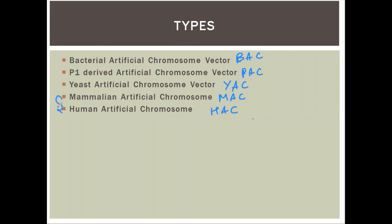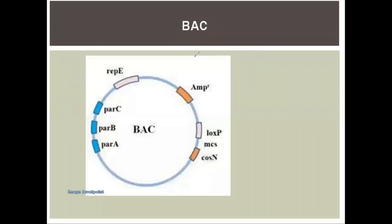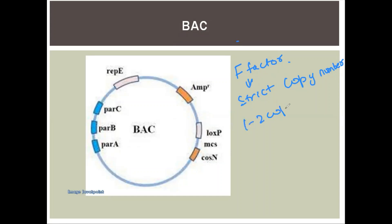Let's start with the Bacterial Artificial Chromosome (BAC). The Bacterial Artificial Chromosome vector uses E. coli. The origin of replication is from E. coli, which is an F factor. The F factor maintains a strict copy number in the host system — only one to two copies of the vector per cell.